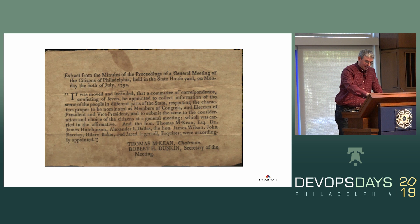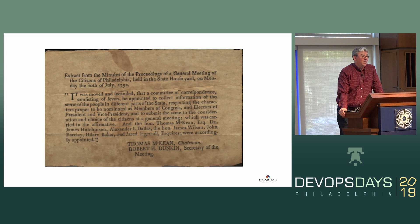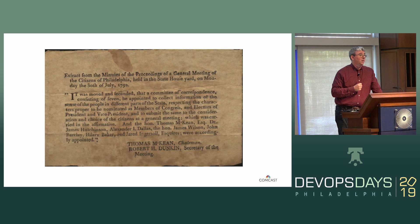I found this — it's the minutes of the proceedings of a general meeting of the citizens of Philadelphia. All of the citizens of Philadelphia apparently had one big meetup, and they wrote down the minutes. How many people write down minutes of the meetings they attend? Back in 1792, if this was a good idea when it was actually a lot harder to write down and disseminate information, why aren't we taking advantage of this now? Especially because lots of the things that we do impact others who couldn't be in that meeting, or who don't even realize a decision was made that they care about.